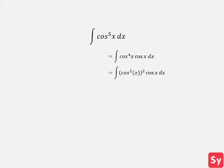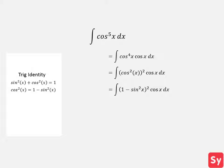Next, we'll use a trig identity. We'll use sine of x squared plus cosine of x squared equals 1, and rewrite that as cosine of x squared equals 1 minus sine of x squared, and substitute this in for cosine of x squared. Now we're able to solve using u substitution, setting u equal to the trig function with a higher power, which is sine of x, and therefore du equals cosine of x dx. We substitute u and du back into the integrand.